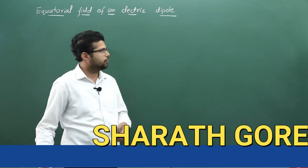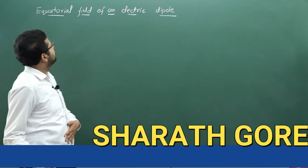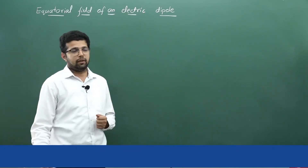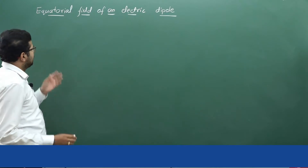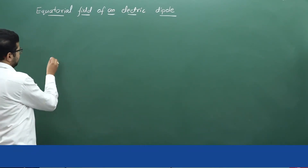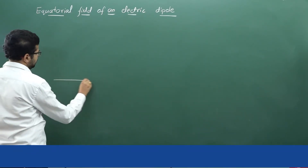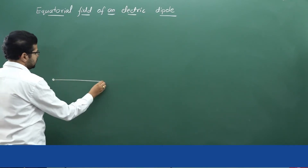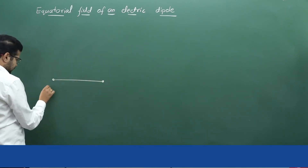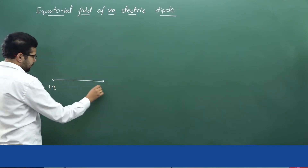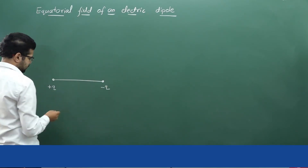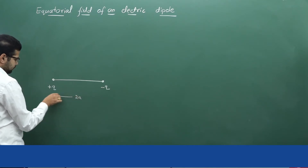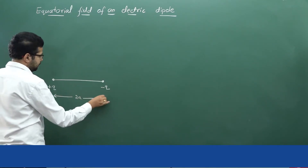Dear students, in this session we will learn how to derive the expression for the equatorial electric field of an electric dipole. As we have done in the previous derivation, first we should draw the electric dipole. If there are two equal and opposite charges separated by a small distance, then we call it an electric dipole. For calculation purposes, we always take the length of the dipole as 2a.